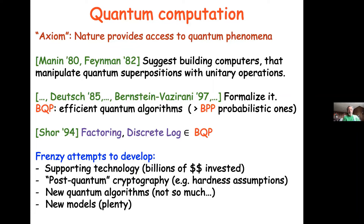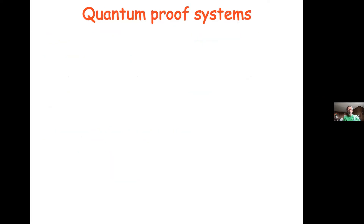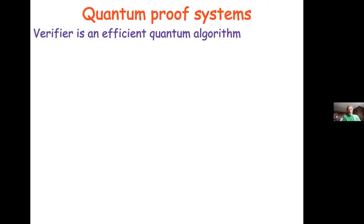There are lots of attempts to develop post-quantum cryptography — to invent other hardness assumptions besides factoring that are not solvable by quantum computers. New quantum algorithms — like whether NP can be solved by efficient quantum algorithms — remain open. What I want to talk about is new proof systems allowing quantum provers and verifiers.